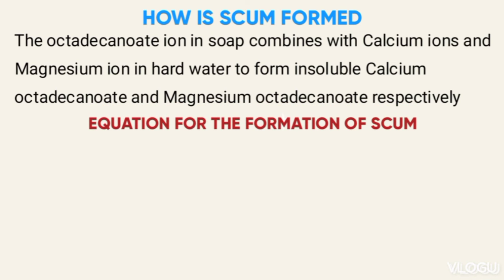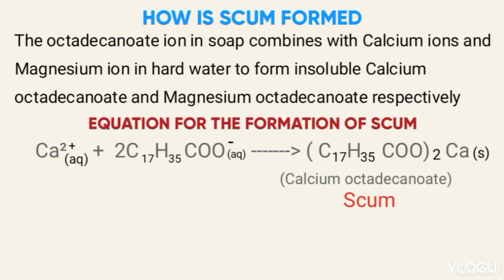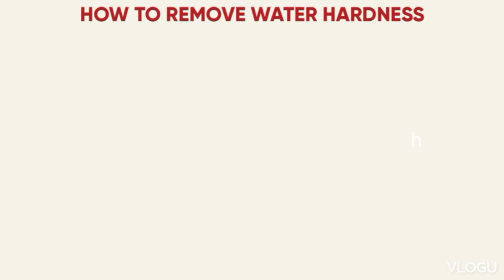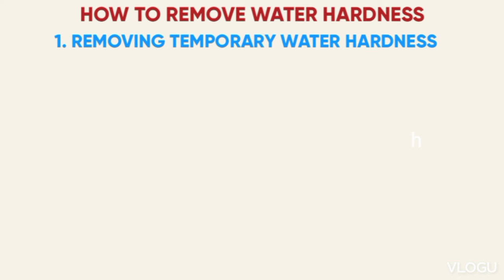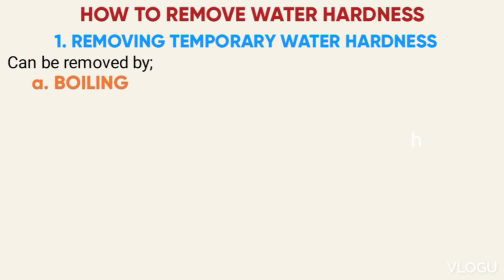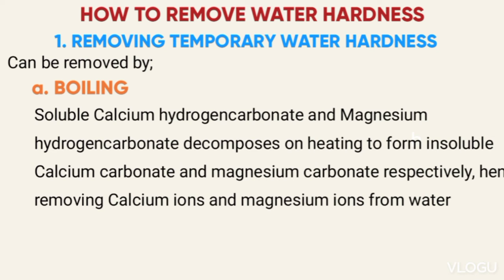The equation for the formation of scum is shown below. How to remove water hardness. Temporary water hardness can be removed by boiling. Soluble calcium hydrogen carbonate and magnesium hydrogen carbonate decompose to form insoluble calcium carbonate and magnesium carbonate respectively, hence removing calcium ions and magnesium ions from water. The equation is shown below.